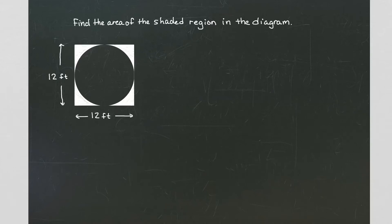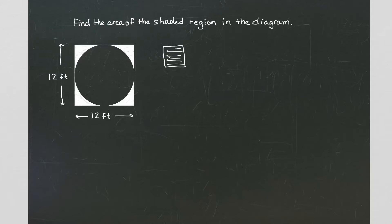Let's take a look at this problem where we're asked to find the area of the shaded region in the diagram below. We specifically want to find the area of the white shaded part. Do you see that this white area is actually a square with a circle taken out of it? The idea is we want to get the area of the outside of a circle that lies in a square. So we're starting with a square, and then from the square, we're taking out a circle.